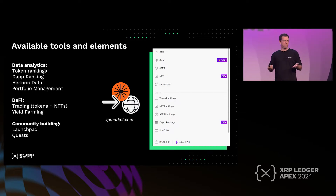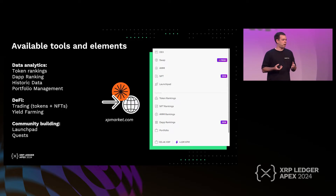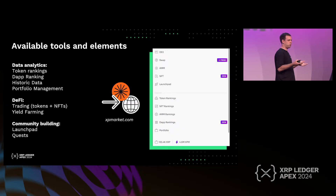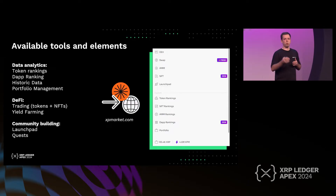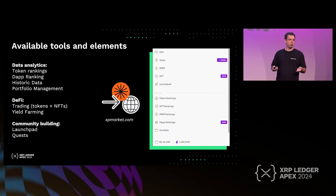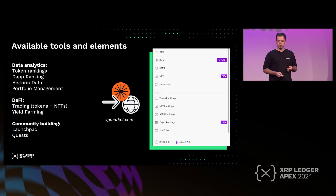We also have a dApp ranking. For the dApp ranking, we are tracking dApps on XRP Ledger based on their source stack, and according to their transactions and total number of users, we are ranking them correspondingly in our platform. So when you go to dApp ranking, you can see which services are available and how they are performing.